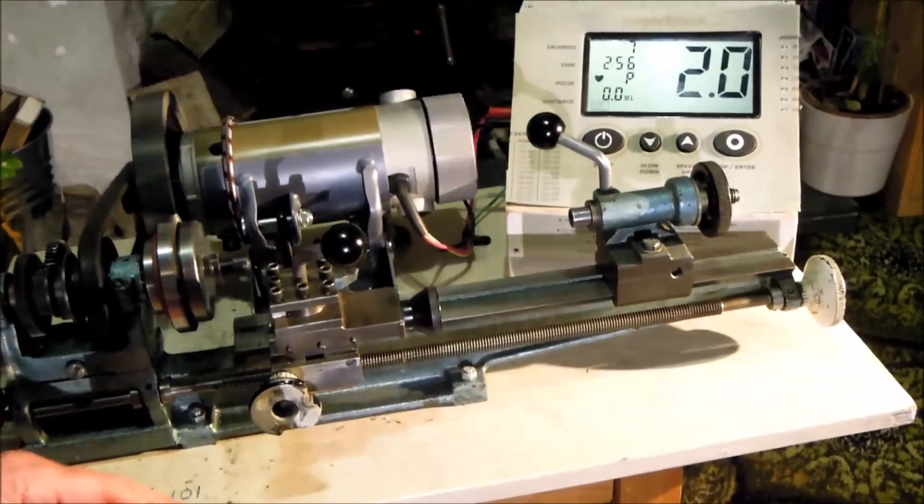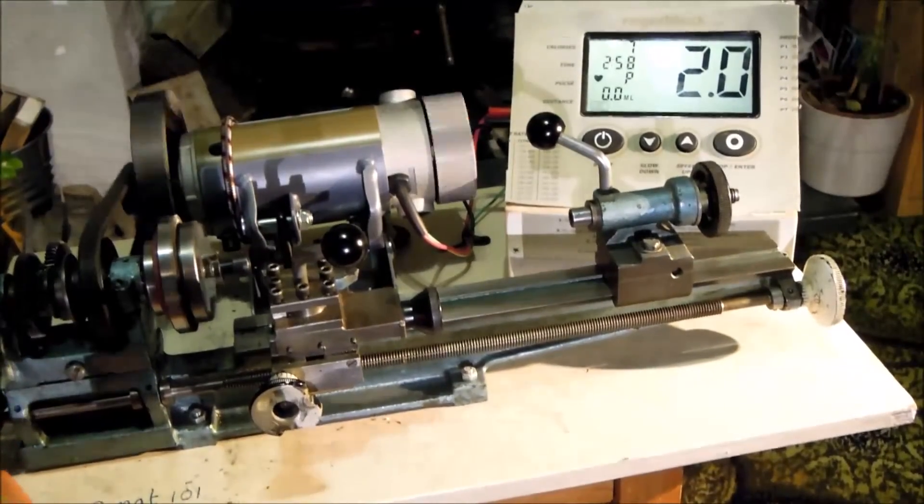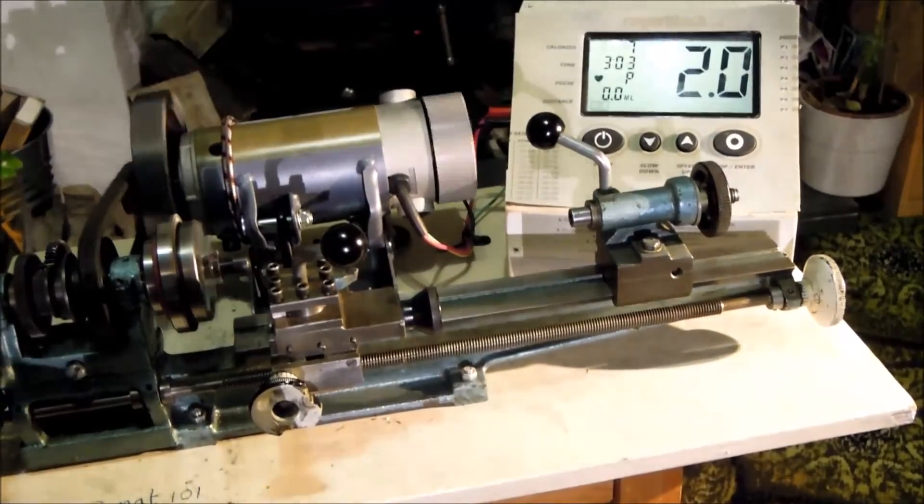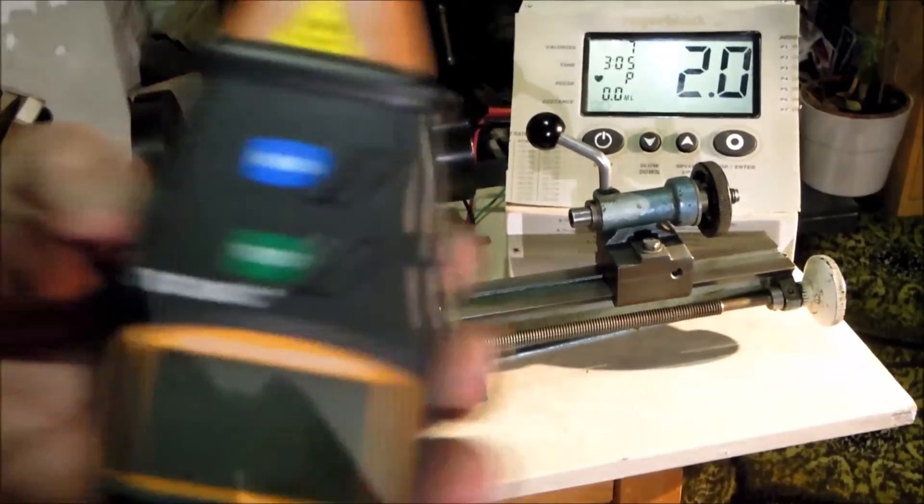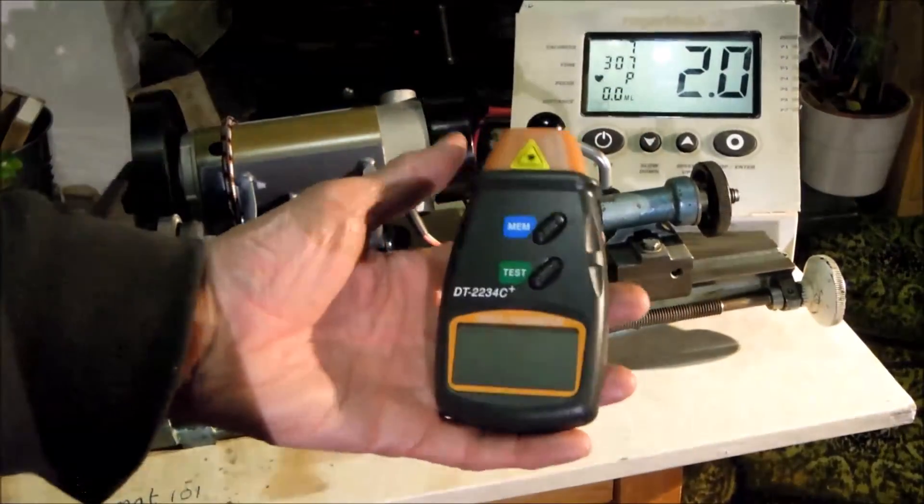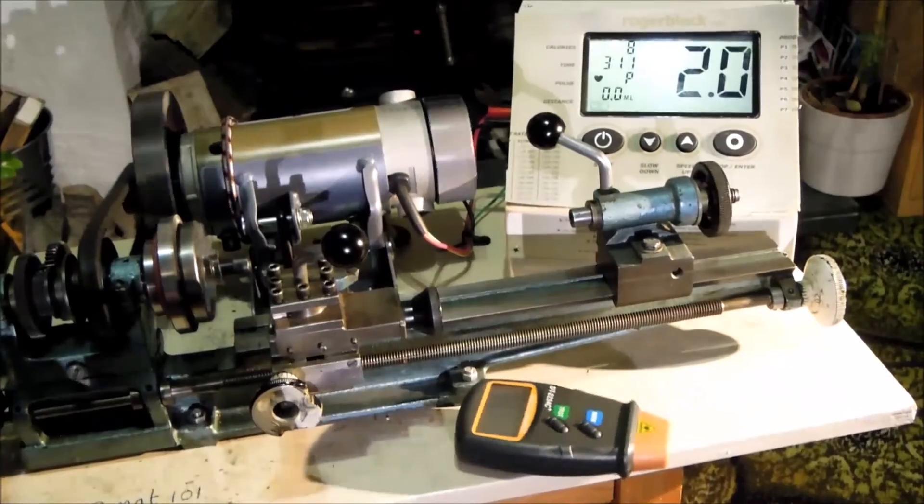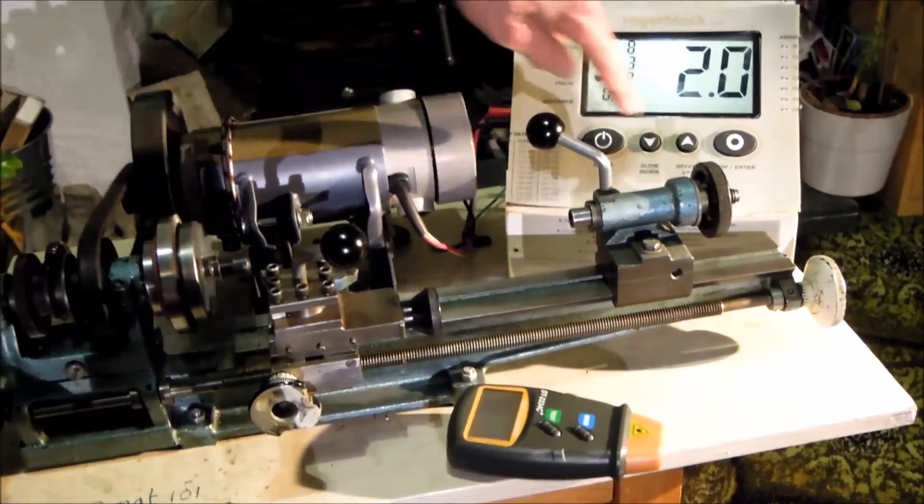So at two I'm getting an RPM on the chuck of about 747. There's going to be plenty of torque there. That now gives me a means of setting the speed of the lathe using this low-cost device from eBay. Okay, thank you, that's enough noise.